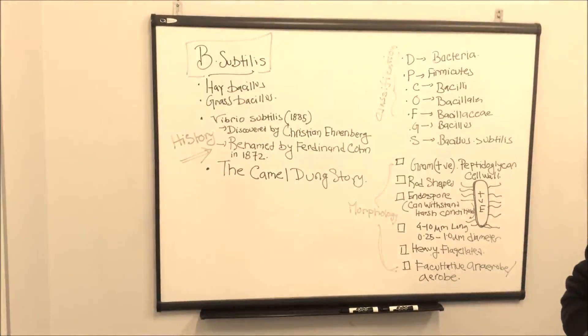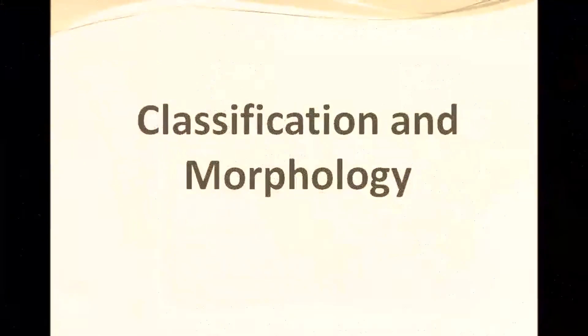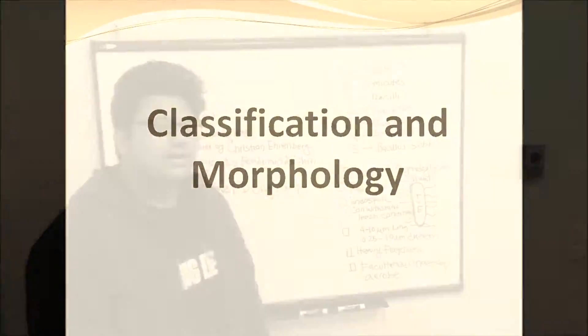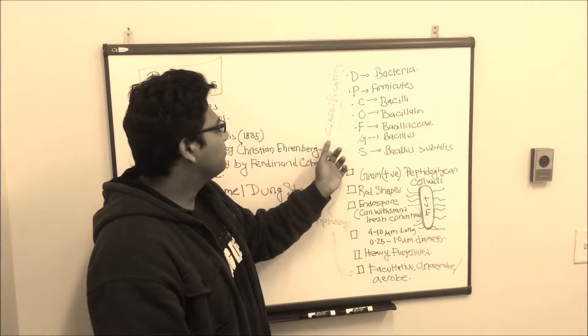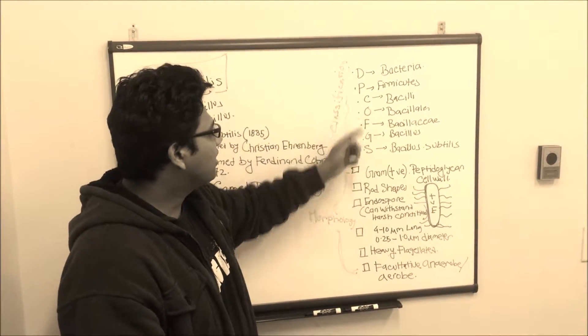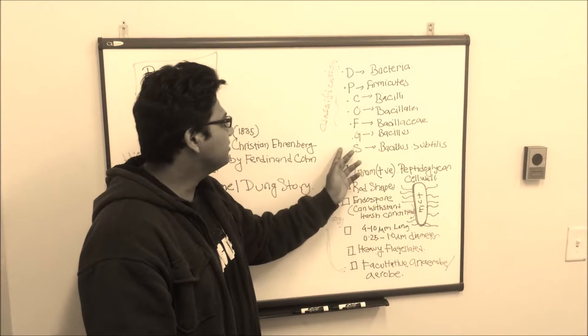Next we'll move on to classification and morphology. Looking at the classification of B subtilis, we're looking at domain, phylum, class, order, family, genus and species.